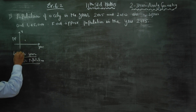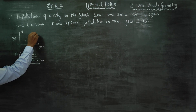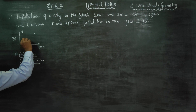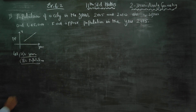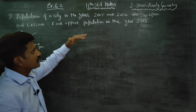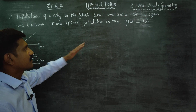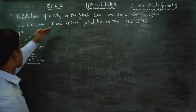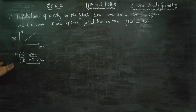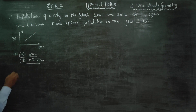Here we have population plots as points. If you join them, you are getting a straight line. You can say the increase in the population is constant — exponential is constant. A straight line means the growth per year is uniform. If you join the points, you are getting a straight line.